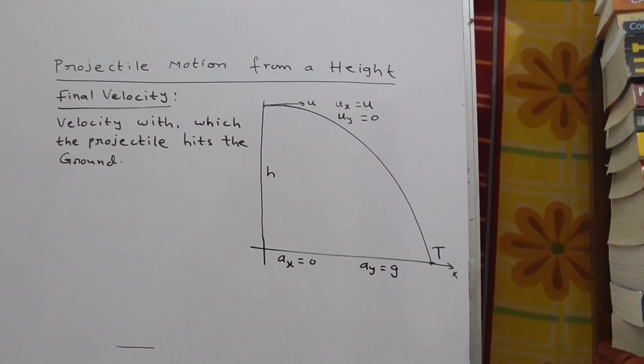Projectile motion from a height. So here we are going to derive equation of final velocity. Velocity with which the projectile hits the ground. So that is final velocity.